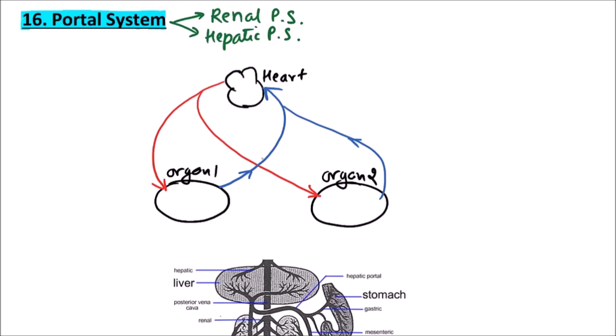Typical arteries come out of the heart and enter the organ to supply oxygenated blood, while a typical vein is expected to originate from an organ, collect the deoxygenated blood, and then drain towards the heart. If a vein is present between two organs in which the heart is not involved, then this is known as a portal vein. A portal vein starts as capillaries and also ends as capillaries, while a normal vein starts as capillaries but never ends as capillaries.